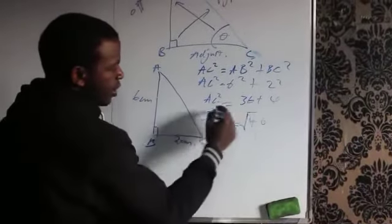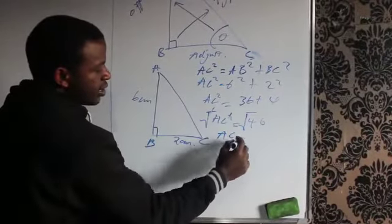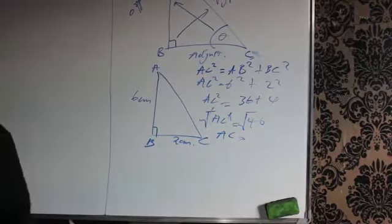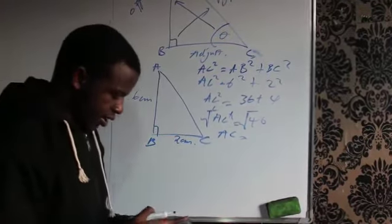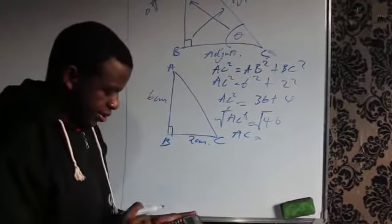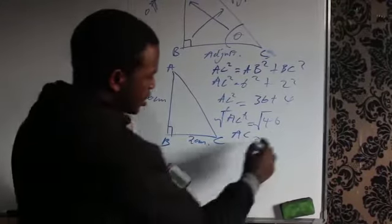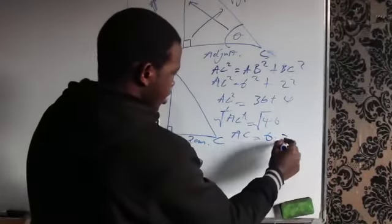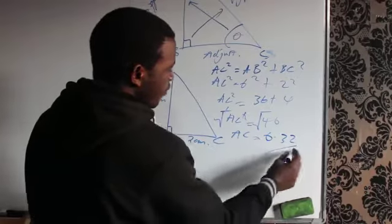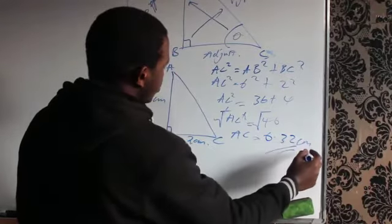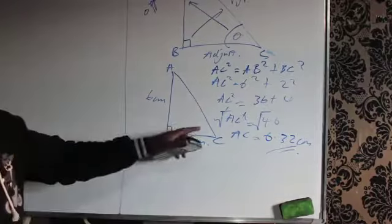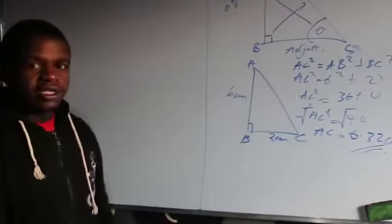So to find the value of AC, we are going to square root both sides. AC is equal to the square root of 40, that's 6.32 if I round off to 2 decimal places, so that's the length of AC.